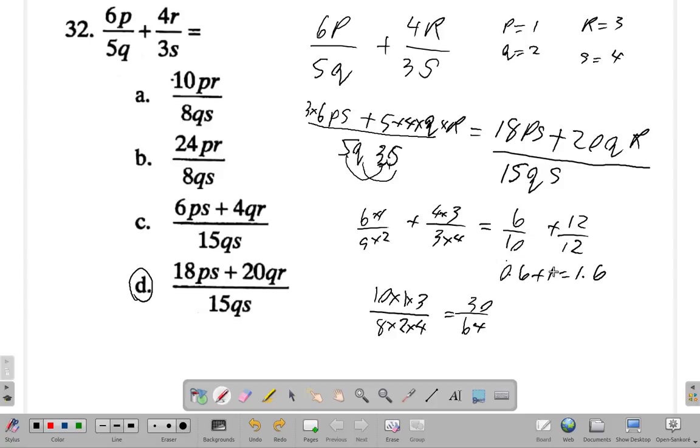This is going to be a smaller number than 1. It wouldn't work. But if you try them and you see this one. 18 times p which is 1 times s which is 3, no, plus 20 times q which is 2 times r is 3.